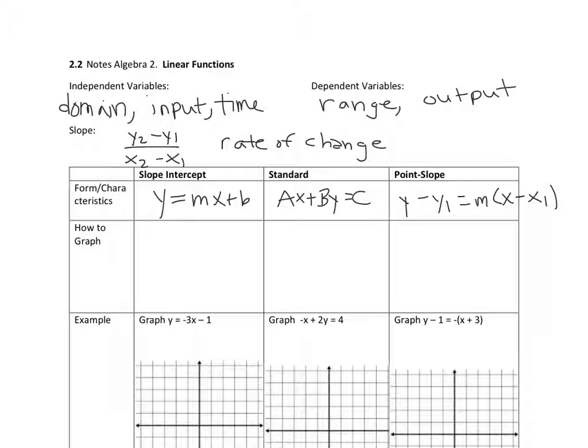So if you have a function such as the money that you make babysitting is equal to $10 per hour, this would be a linear function. There's two variables. Hours would be the independent variable, and the money is the dependent variable. The money that you make depends on the number of hours that you work babysitting.